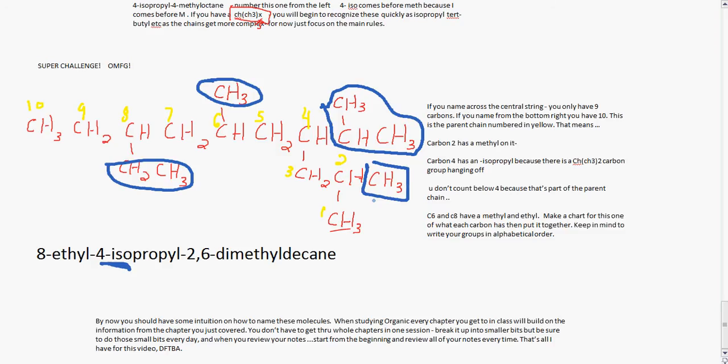So by now you should have some intuition on how to name these molecules. And when studying organic, every chapter you get to in class will build on the information from the chapter you just covered. So you don't have to get through whole chapters in one session to study OCHEM, it's just a study tip. Break it up into small bits like I just did here and then take a break and move on to another one. But be sure to do those small bits every day. And when you review your notes, start from the beginning of your notes and review all your notes every time. And that's all I have for this video, DFTBA.